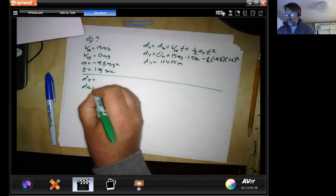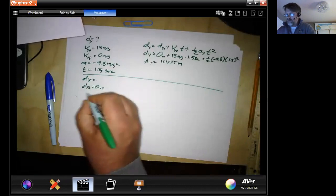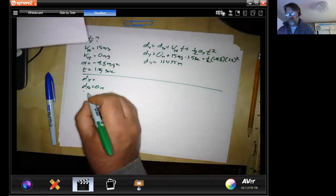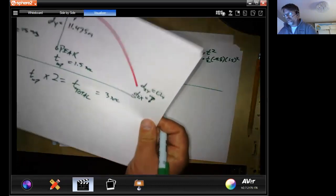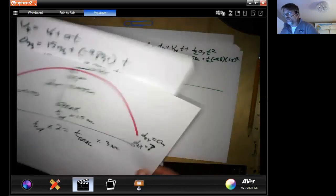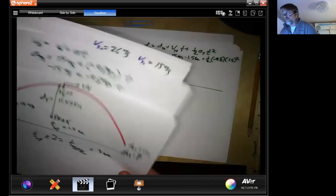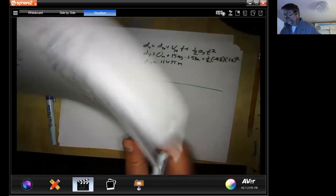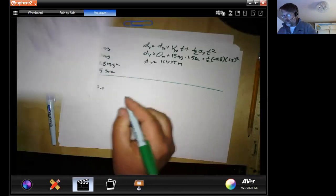So what do we know about this? We know our original position is 0 meters. We know our velocity in the x. What was our velocity in the x? The paper is here.